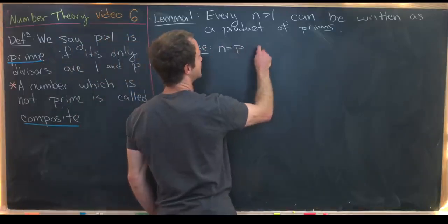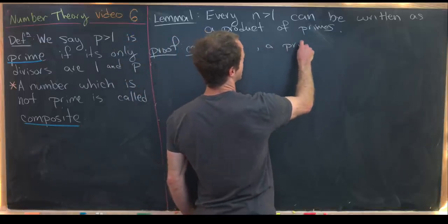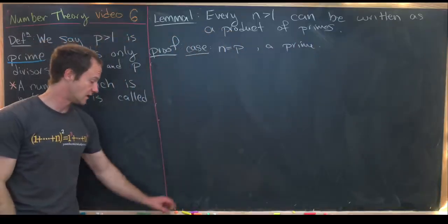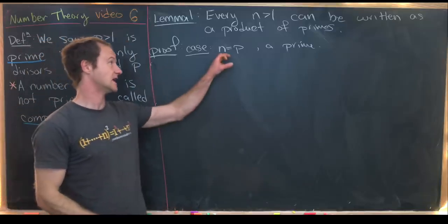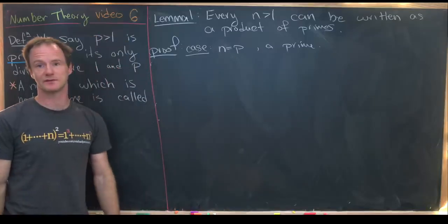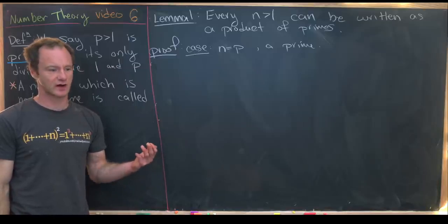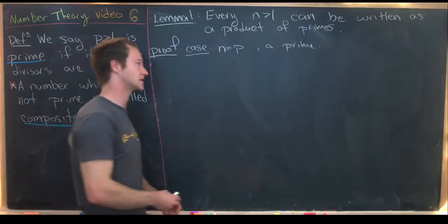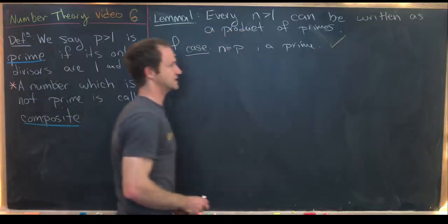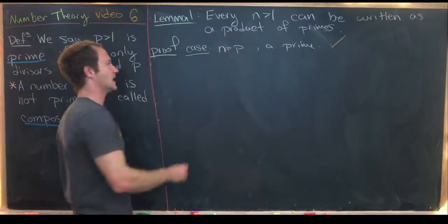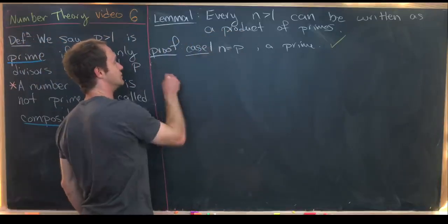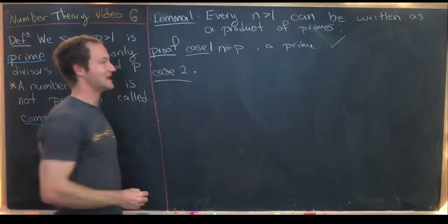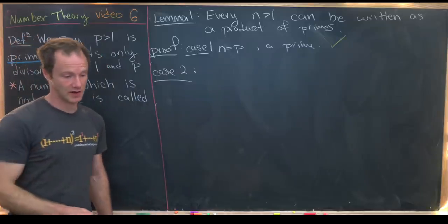We'll start with Case 1, which is totally trivial: n equals p, which is a prime. In this case we're already done, because we've written n as a product of primes — in fact it's just the product of a single prime, a kind of trivial product. So Case 1 is done. Now we'll move on to Case 2: n is not prime.